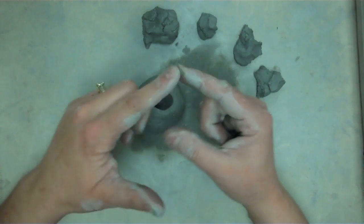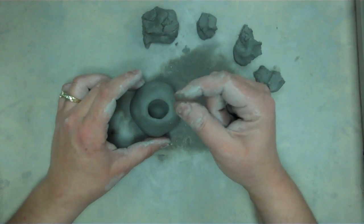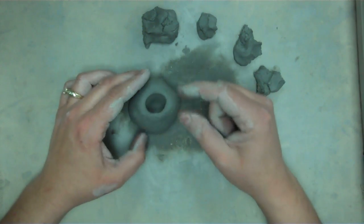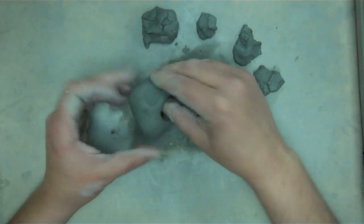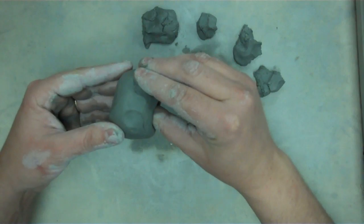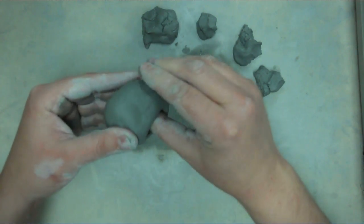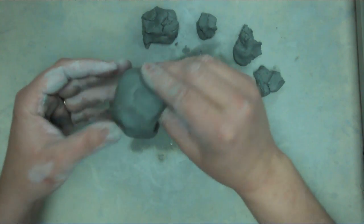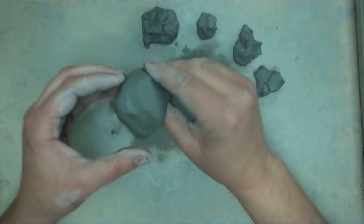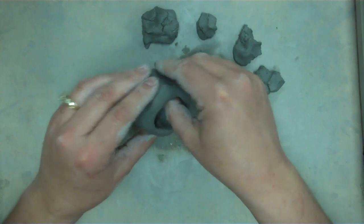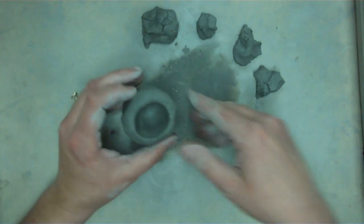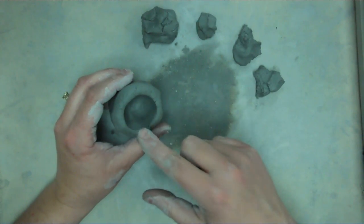Then you're going to take your thumb and your pointer finger and you're going to pinch the edges of the clay. So put your thumb back in, pinch, turn, pinch, turn, pinch, turn, and you're going to keep pinching and turning your clay. Notice how the hole's getting larger? This is going to be the mouth of the monster.